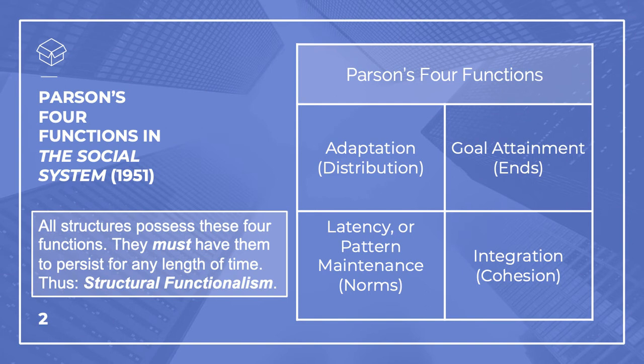3. Integration. In order to function, components of action systems must combine in particular ways, in a consistent and durable manner — that is, they must integrate and remain integrated. For large-scale bureaucracies, people must possess and perform in particular roles. For individual organisms, internal circulation must continue. Rather than simply adapt to an environment, action systems organize components internally to incorporate environmental elements. I is for integration.